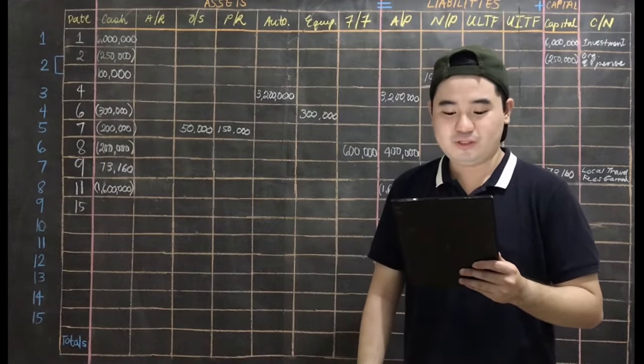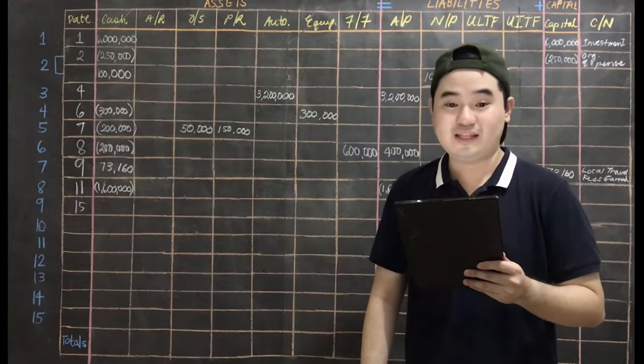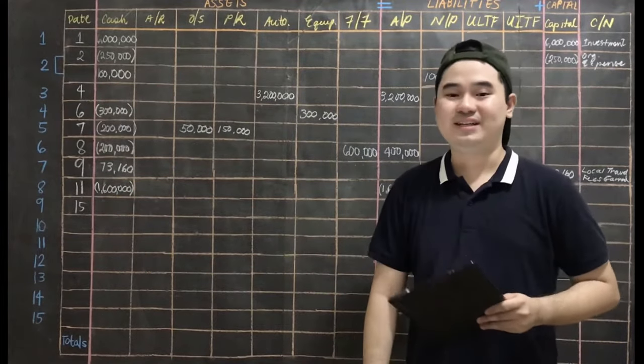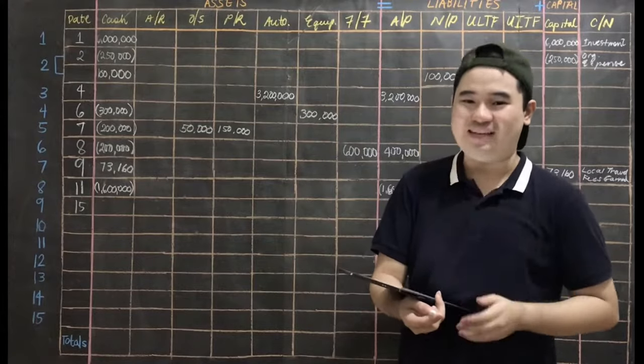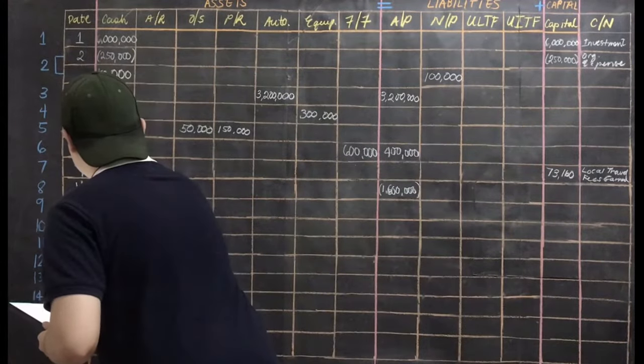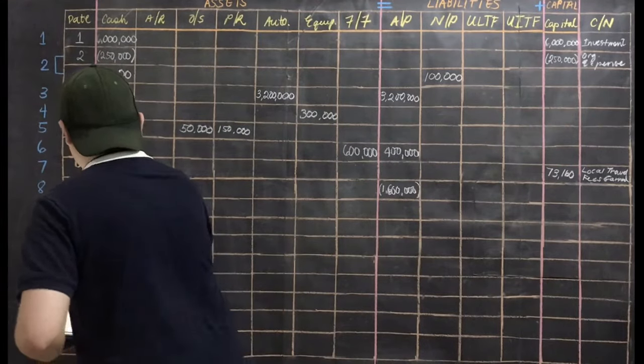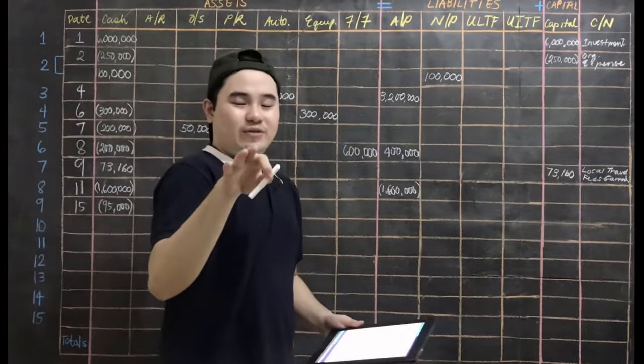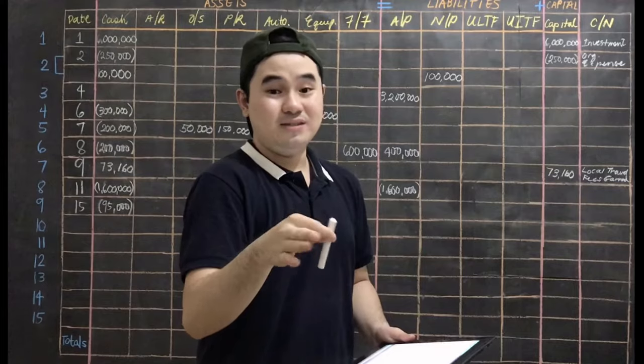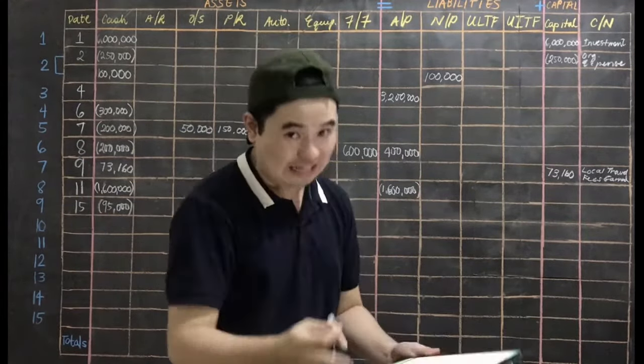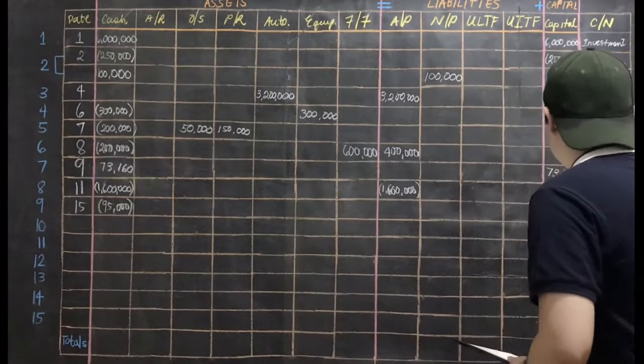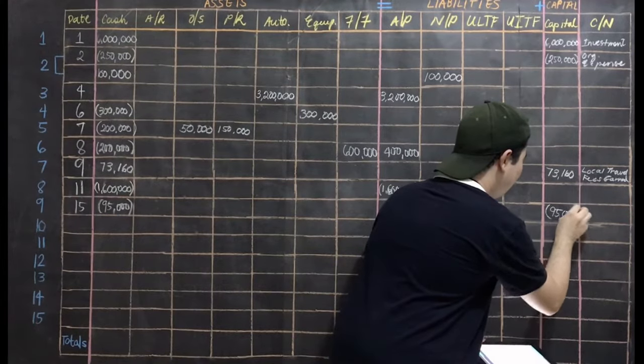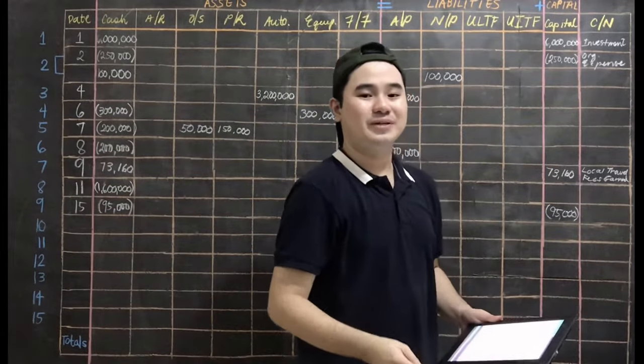Transaction number 9 happened on April 15. Paid salaries of employees total of 95,000 in cash. Cash payment again, so your cash will decrease by 95,000. So negative 95,000 on your cash account. Revenue and expenses affect your capital, but expense is a cost so it will affect your capital negatively. So you put here negative 95,000. What kind of expense is that? Salaries expense.